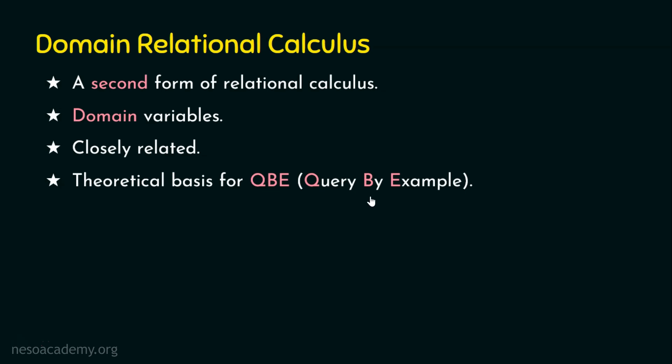QBE is one of the database query languages for relational databases and is the first graphical query language. Originally, QBE was developed for retrieving data from the database, and later it was extended to insert, delete, or update data, and even to create temporary tables. A well-known example that uses QBE is Microsoft Access, where we supply queries in the form of commands and can see the graphical output.